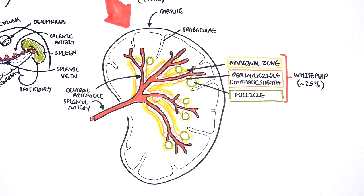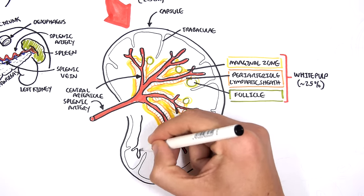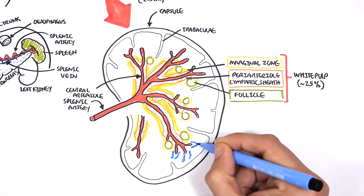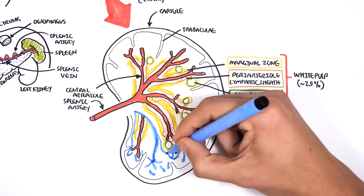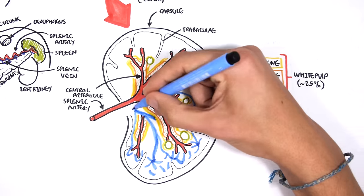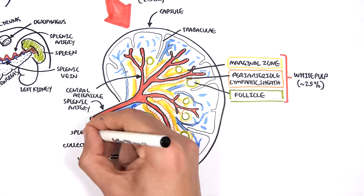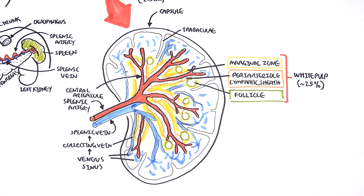Going back to the splenic artery — the splenic artery branches into the central arteriole and then becomes end arteries or end capillaries. It doesn't connect straight away to veins. These end arteries have no wall, which allows red blood cells and other cells to flow into the surrounding tissue. The cells are then picked up by a sinus system shown here in blue — the venous sinus — which is all around the end capillaries. The venous sinus picks up the red blood cells and transports them to the collecting veins, which drain into the splenic vein before leaving the spleen.